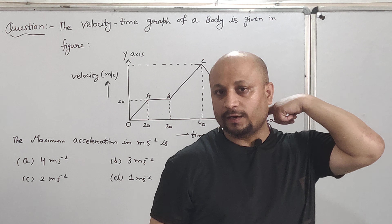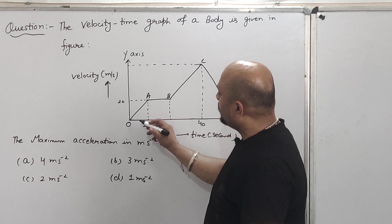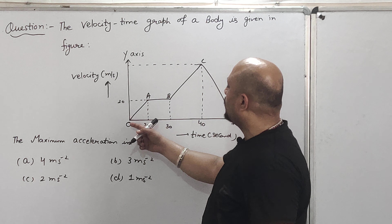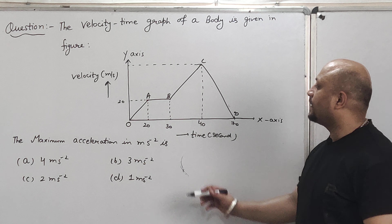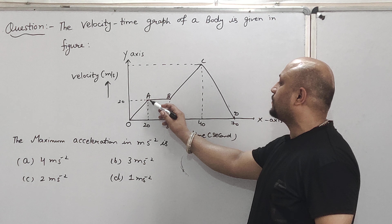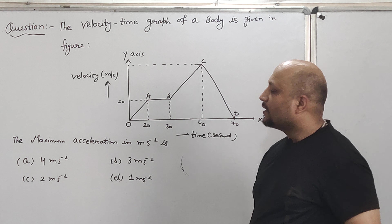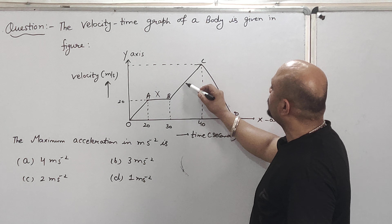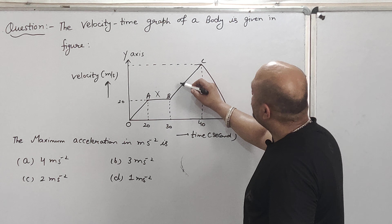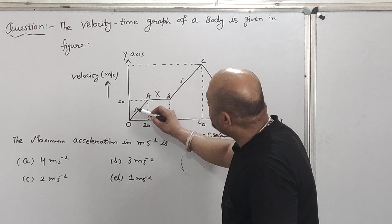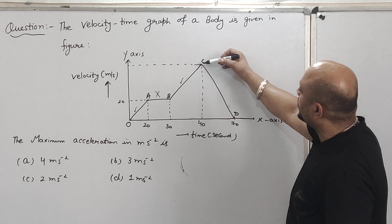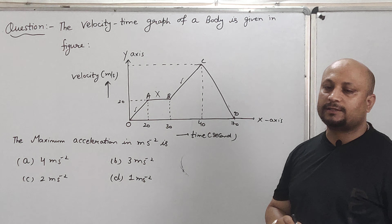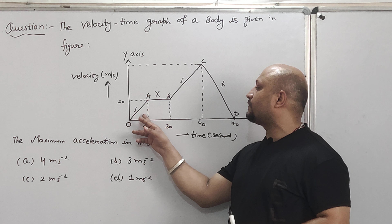If we talk about part OA, the speed is increasing with respect to time, which means OA shows acceleration. In part AB, the speed is constant with respect to time — it is not changing — so there is no acceleration in this part. In part BC, speed is again increasing with respect to time, so the body is accelerating. In part CD, velocity is decreasing with respect to time, which means this is the part of retardation, not acceleration.